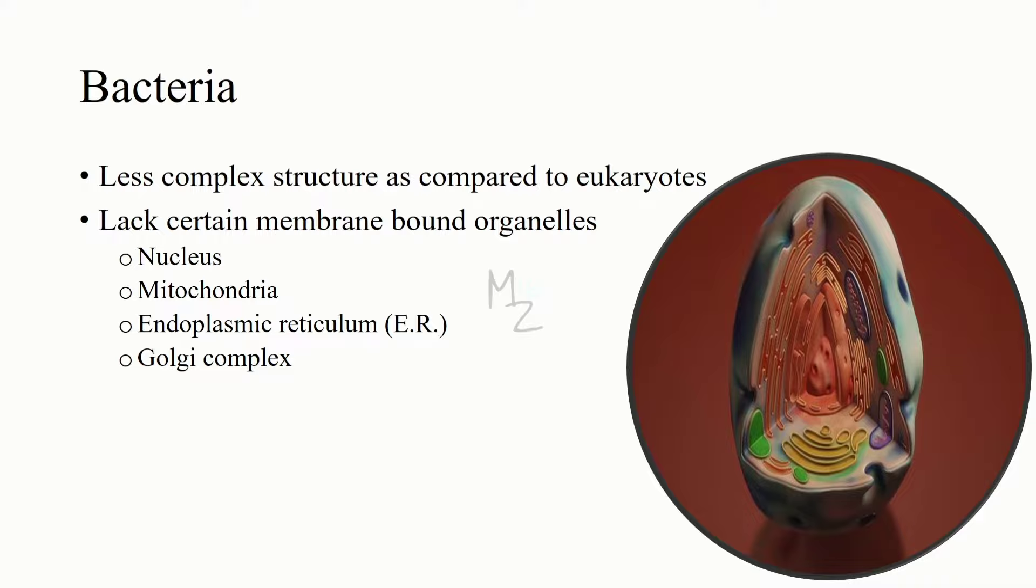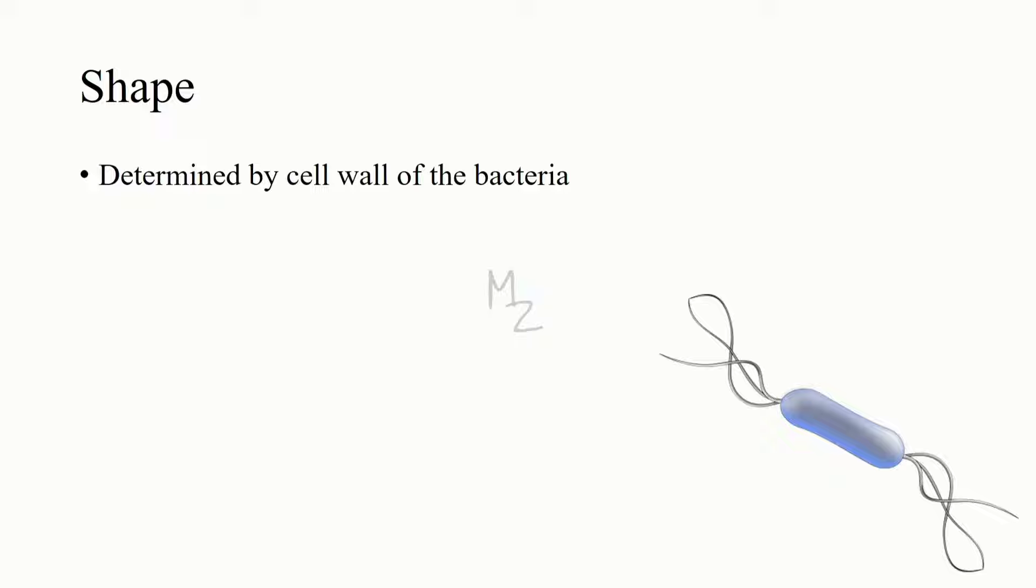Bacteria have less complex structure as compared to eukaryotes. Bacteria lack certain membrane-bound organelles such as nucleus, mitochondria, endoplasmic reticulum (the ER), and Golgi complex.